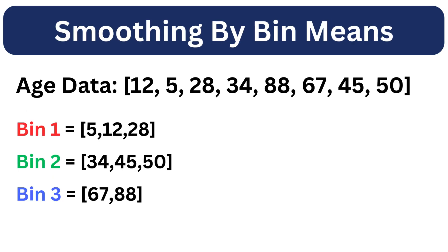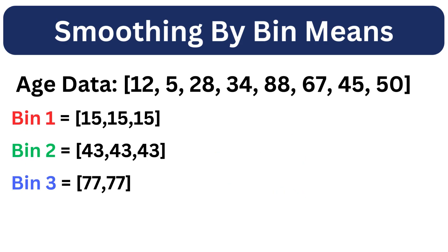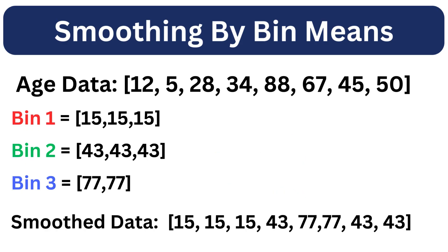Now let's discuss the smoothing methods. We will take the bins created in the previous example and apply the smoothing methods to them. The first one is smoothing by bin means, which simply means we replace all of the values in a bin by its mean. First we calculate the mean of each bin, and then we replace each value in the bin by that mean. The data after applying smoothing looks something like this.